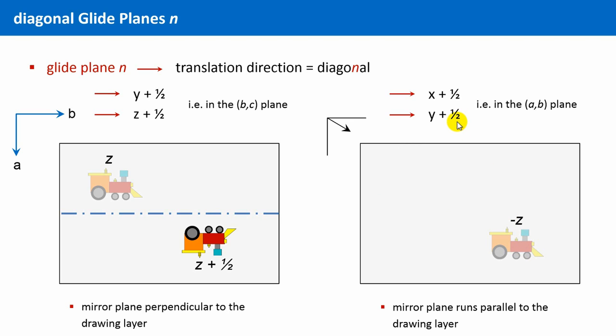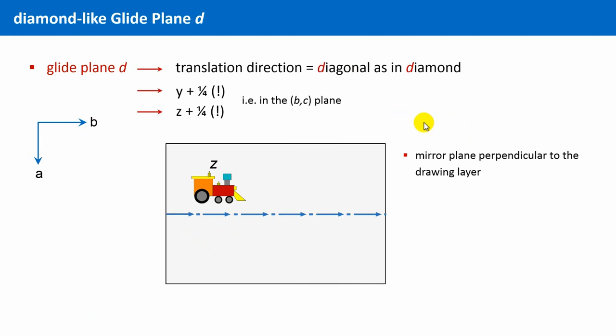There are two special glide planes left. Next, we will explore glide planes D. They are also sometimes called diamond-like glide planes, because they occur indeed in the crystal structure of diamond. Again, easy to remember, D as diamond. This is again a glide plane in which a diagonal translation operation has to be carried out. But this time, and in contrast to the glide plane N, only by one quarter in two directions, not one half.